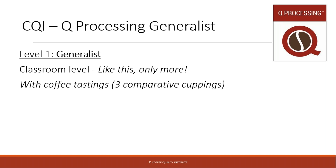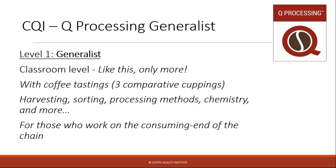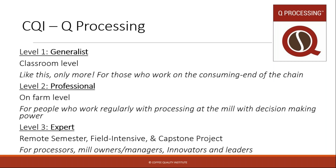This information is part of our CQI Q Processing Generalist class, which is our level one of the Q Processing Curriculum. It's a classroom-based course covering materials like this — plus lots more. We have three coffee tastings, and we cover harvesting, sorting, processing methods, chemistry, and a lot more. It's designed for those of us who work on the consuming end of the chain. The Q Processing Curriculum also has a level two course, which is on-farm level, designed for people who work regularly with processing at the mill and hopefully have decision-making power to implement new information gained in the class.